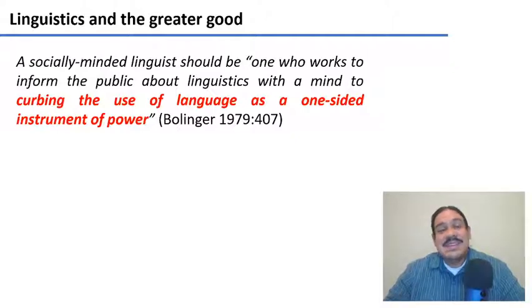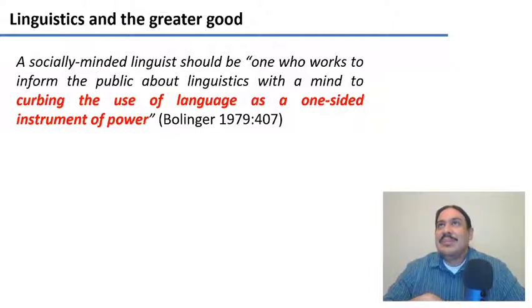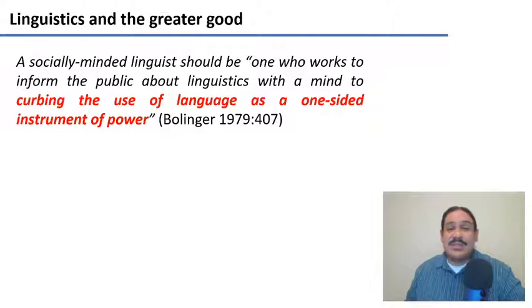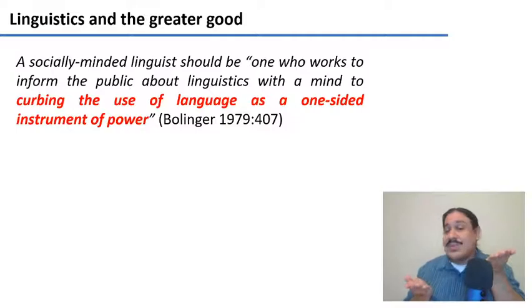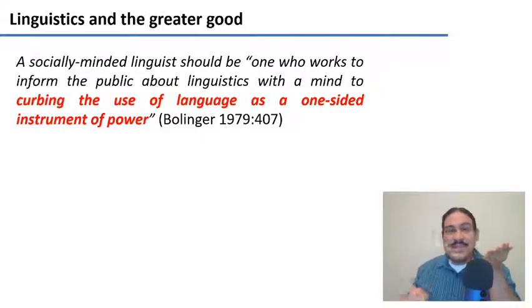In the end, we know many instances in society where language can be used as an instrument of power, and many times this is a one-sided instrument of power. I want you to think about how you can use the knowledge of language in your field to try to make things better. In computer science, for example, there are many natural language processing tools for about 80 or 90 languages in the world, but for most of the other languages, there's absolutely nothing. So you can see how if you only speak one of these thousands of other languages, you can't fully use a cell phone.